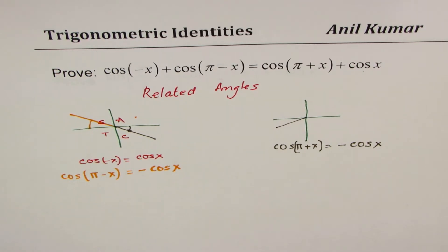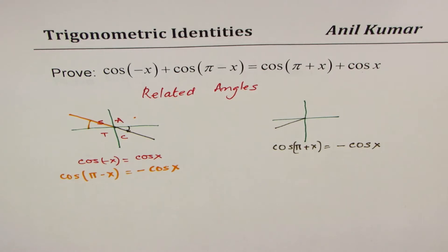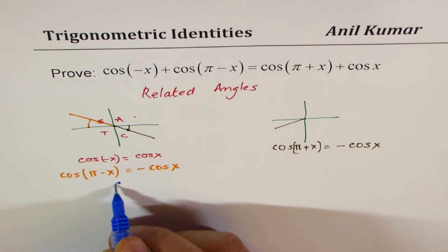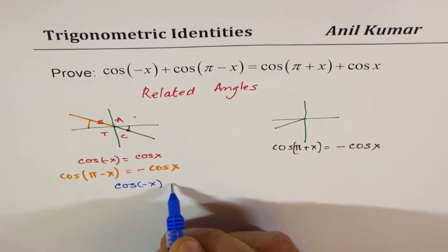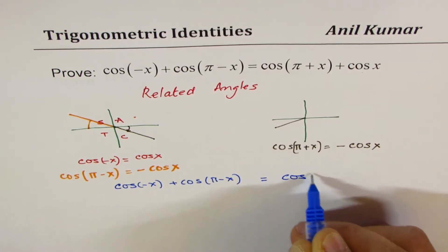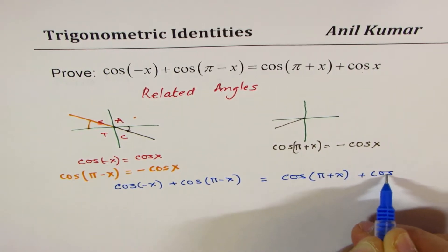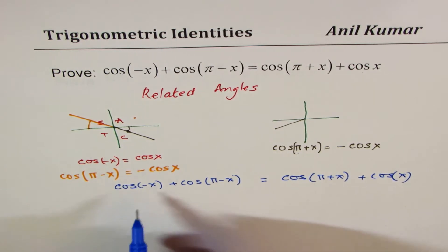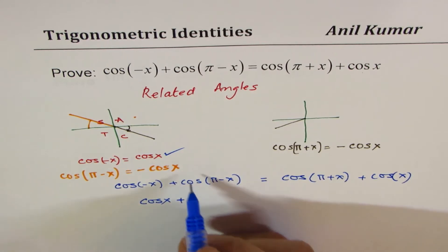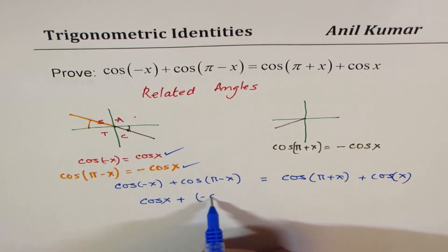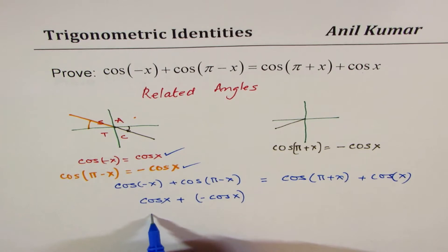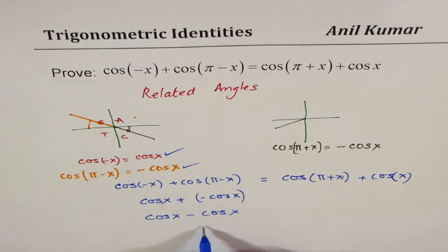Now we will write down the left-hand side and the right-hand side in terms of their related acute angles. On the left side: cos(-x) + cos(π - x) = cos(x) + (-cos(x)) = cos(x) - cos(x) = 0.